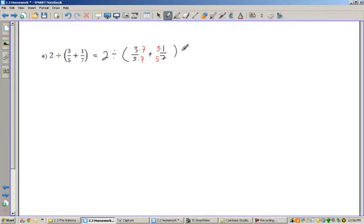I can figure out what those are, so this is going to be equal to 2 divided by, and I have 21 over 5 times 7 is 35, and then plus 5 over 35. When I have a common denominator, then I can add these two things together. So I have 2 divided by, and 21 plus 5 is 26. And, of course, the denominator stays the same.